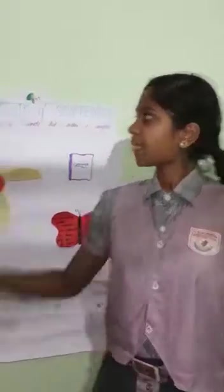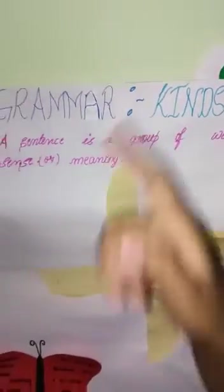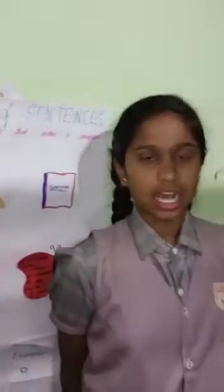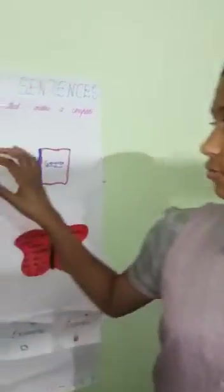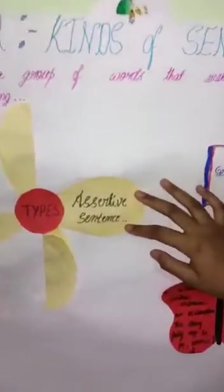Now, what is a sentence? A sentence is a group of words that makes a complete sense or meaning. Now, let us learn about four kinds of sentences. First, assertive sentence.